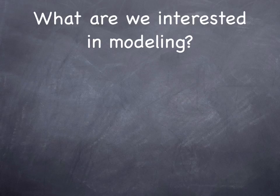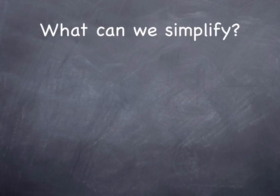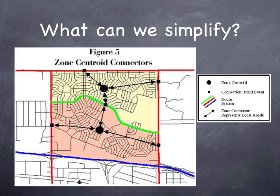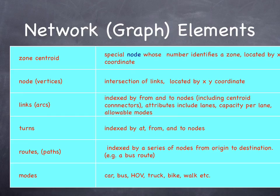So when we're building transportation models, what are we interested in modeling, and what can we simplify? In a regional model, it's typical to simplify local streets. We define a centroid to represent all of the local access onto the higher-level street network. We also describe the network with graph theory. We have zone centroids, nodes, links, turns, routes, and modes.